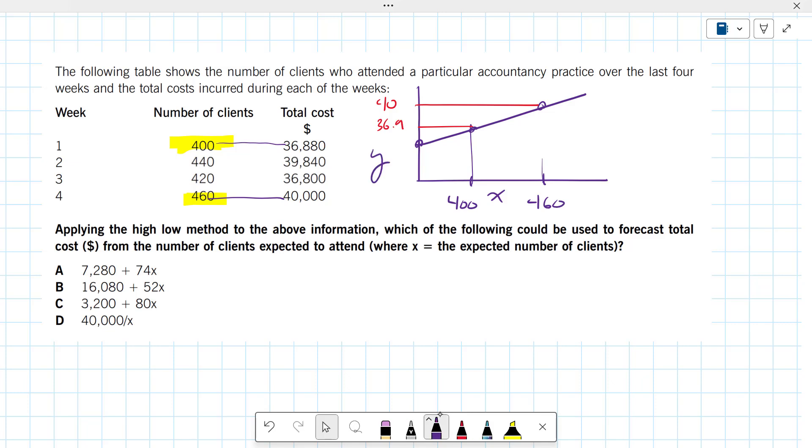You might be wondering, oh, look, this one actually has a lower cost. Maybe we should use that one, but no. We are going to ignore any of the data that's in between the high and the low. It's not perfect correlation, but we're going to assume that. So we're going to ignore this data in the middle, and now just assume that we have a straight-line equation.